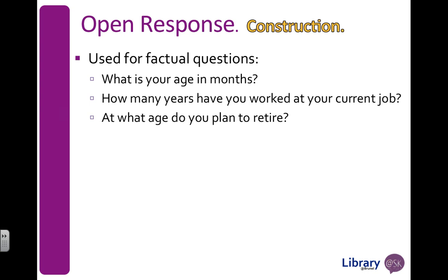Sometimes these kinds of questions are also used with categorical responses. So you might say, for example, what is your age in years, and have options like 18 to 24, 25 to 30, etc. Or what age do you plan to retire — 60 to 62, 63 to 64. If you choose to do it that way, that's perfectly fine. It just means that your data is categorical rather than numerical.